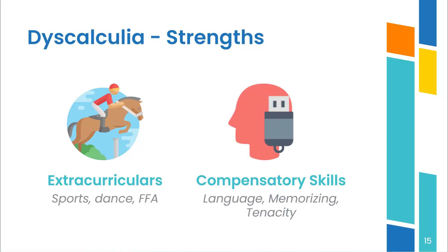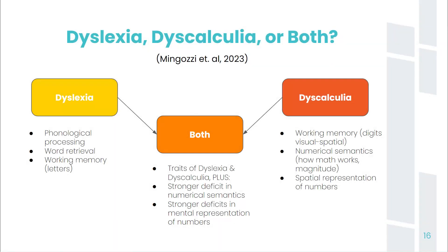Our students are all different, and many of their strengths develop over time. If you've got a student that seems to be struggling significantly, could it be dyslexia or dyscalculia? Or is it possibly both? If a student has both, you'll see stronger deficits in semantics — how the numbers work — and mental representations of numbers. You'll want to spend more time with the concrete and explicit instruction, and make sure you give tons of think time without that teacher talk. This is crucial.